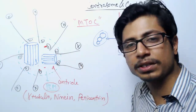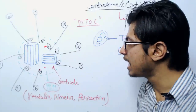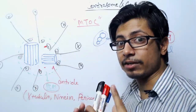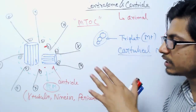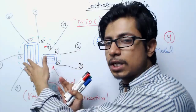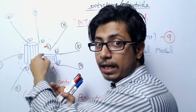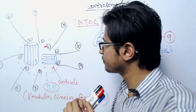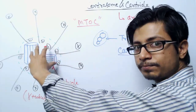Such microtubules are organized and arranged with each other in a barrel shape to form what is known as a centriole. In the centriole, we have two such barrels present at a 90-degree angle with each other.